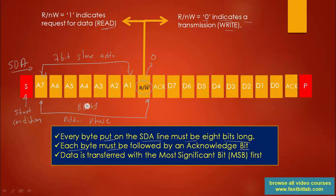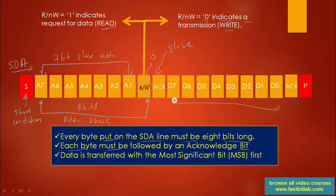Once the 8 bits are sent in the address phase, the slave is going to receive this and match its own address with the 7-bit slave address sent. If there is any match, then the slave is going to send an ACK. Master receives the ACK, and since R/W bar is 0, it is going to do a write operation — it is going to write 1 byte of data.